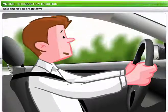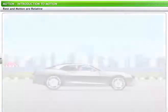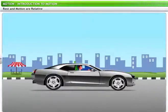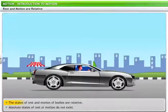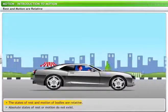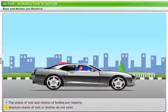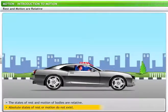This is because, with respect to the car, the driver is at rest. But with respect to the other things around, he is in motion. Thus, the states of rest and motion of bodies are relative. Absolute states of rest or motion do not exist.